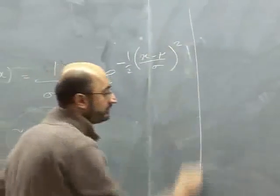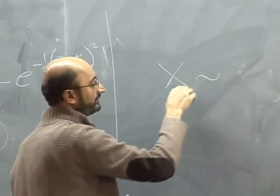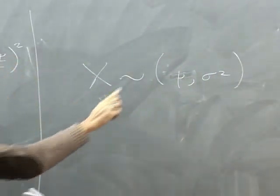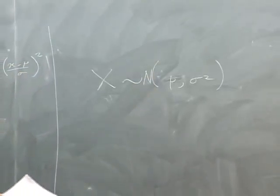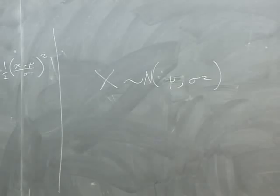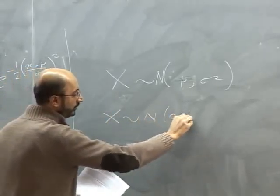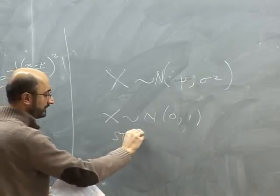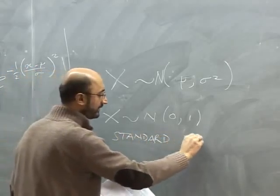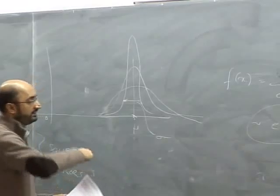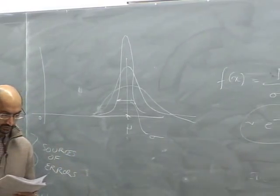The notation we use is: capital X ~ N(μ, σ²), meaning X is distributed normally with parameters μ and σ². Here σ² is the variance and σ is the standard deviation. For the particular case where X ~ N(0, 1), we call this the standard normal distribution — it has a mean of 0 and standard deviation of 1.